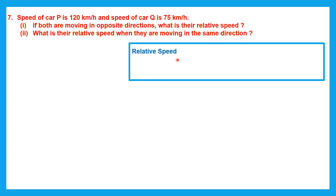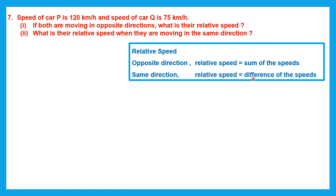If the two bodies are moving in opposite directions, the relative speed is the sum of the speeds — you add the two speeds. If they are moving in the same direction, it's the difference of the speeds — you subtract. So: opposite direction means add; same direction means subtract.